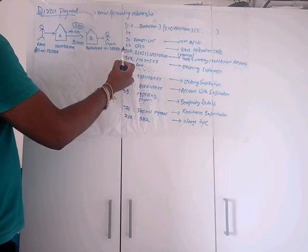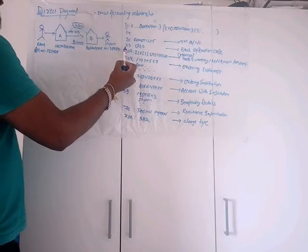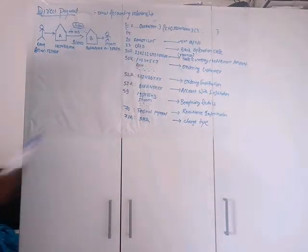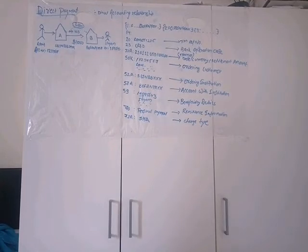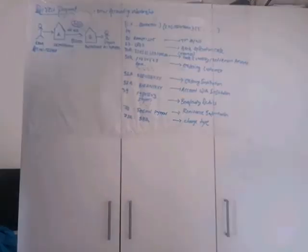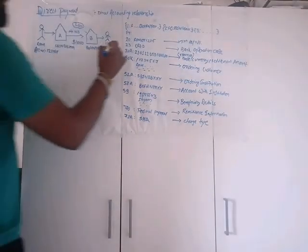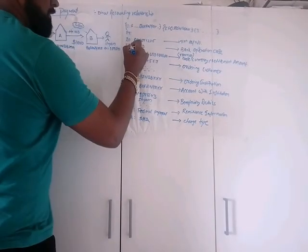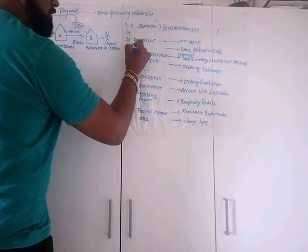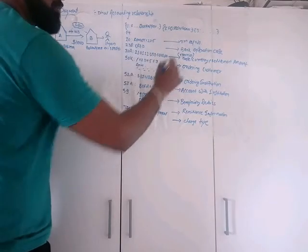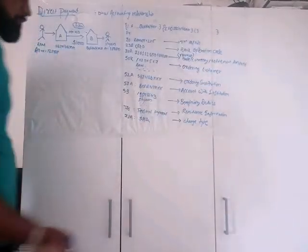The next tag is 23B, which is the bank operation code. The value will be CRED for credit. It is tag 23B — the bank operation code.